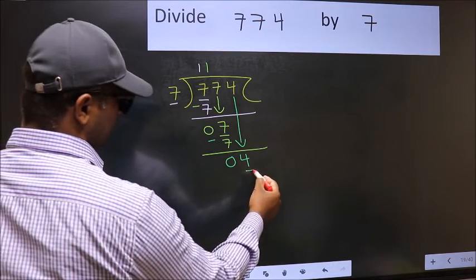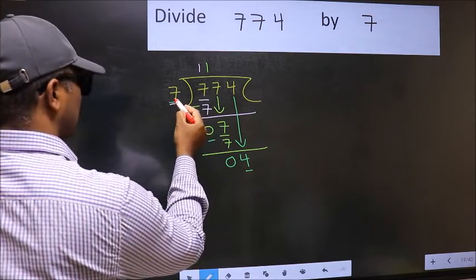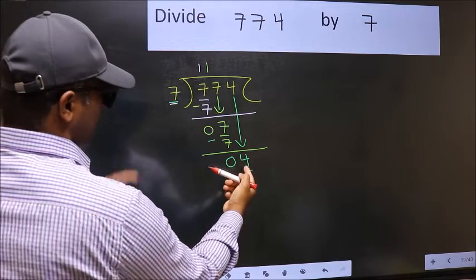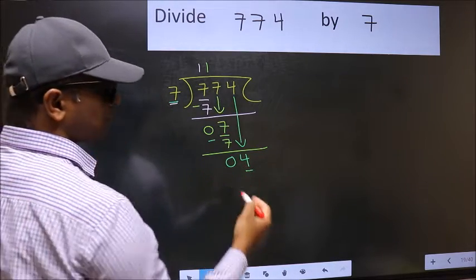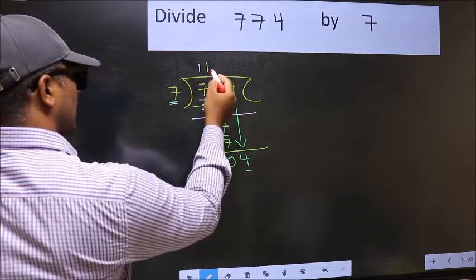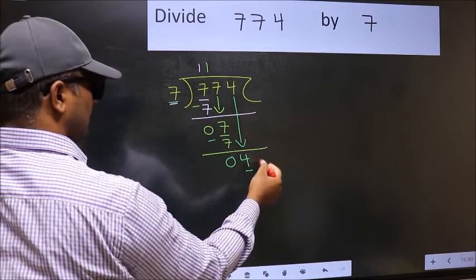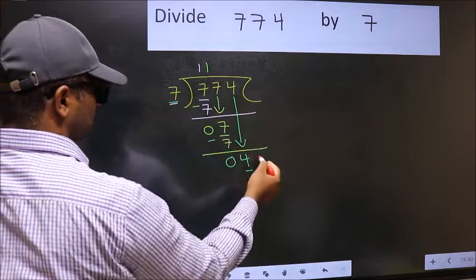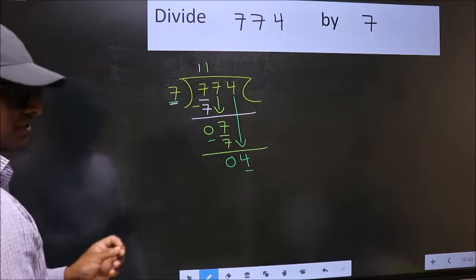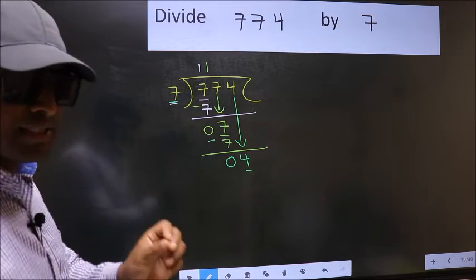Here we have 4 and here 7. 4 is smaller than 7. So what many do is they directly put dot and take 0, which is wrong. Why is it wrong?